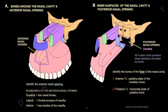In this slide we have two diagrams. Diagram A shows bones around the nasal cavity and the anterior nasal opening. All bones around the nasal cavities are: nasal bone, frontal process of the maxilla, lacrimal bone, ethmoid bone, palatine bone, and the medial pterygoid plate of the sphenoid bone. Above, the roof is formed by the cribriform plate of the ethmoid bone, and the floor is formed by the body of the maxilla.